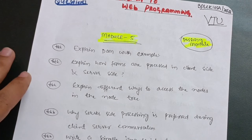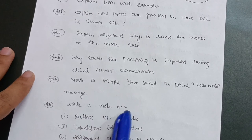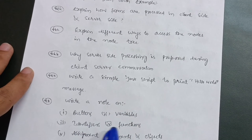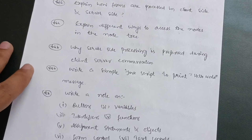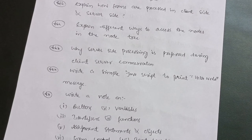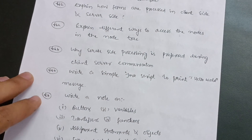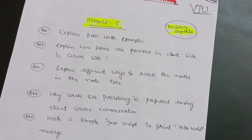The most important question is: write a note on buttons, variables, identifiers, functions, assignments, statements, and objects, and form control text controls, reset function, and focus function methods. You have to cover this full module. These six questions from Module 5 will help you conquer 20 marks. This much content is enough for Module 5. Let us proceed to the next passing module — Module 4.